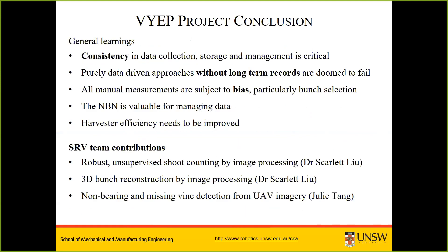What else have we learned? Consistency in data collection is critical. It is very rare to find a company or grower with long-term records of all yield components. We have developed a database system able to manage these records, but more work is needed. Bias is everywhere, so taking human measurement out of the loop is critical. Being able to transfer data is also very important — the NBN on both sites dramatically improved our feedback times. We also found that harvester efficiency needs improvement.